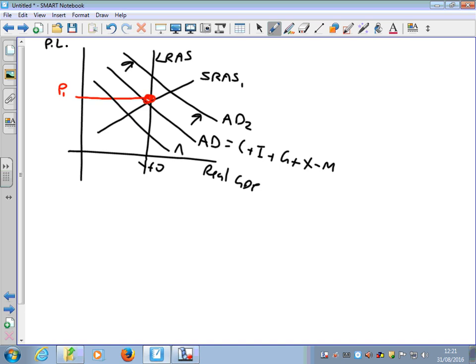If aggregate demand falls, let's say to AD3, it's for the opposite reasons. It could be that income levels are falling, which means that people can't afford to buy as much stuff. Consumption falls. People are saving more money, for example. Maybe firms are pessimistic, they're investing less. Now if we were to move to AD2, we've got a positive output gap. We're working beyond potential. If we were on AD3, we've got a negative output gap. So the ideal situation would be to be at P1, YFO.